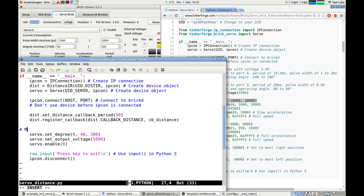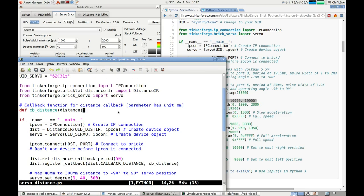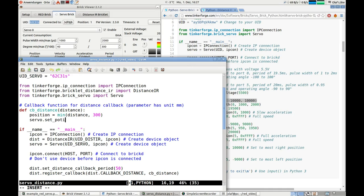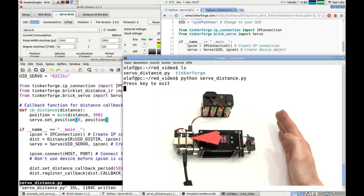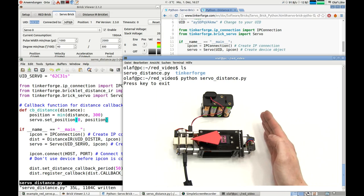The open source software BrickViewer assists us with the programming. It can be used to test and configure all of the connected modules. We execute the completed program on the PC and control the project externally over USB for testing purposes.